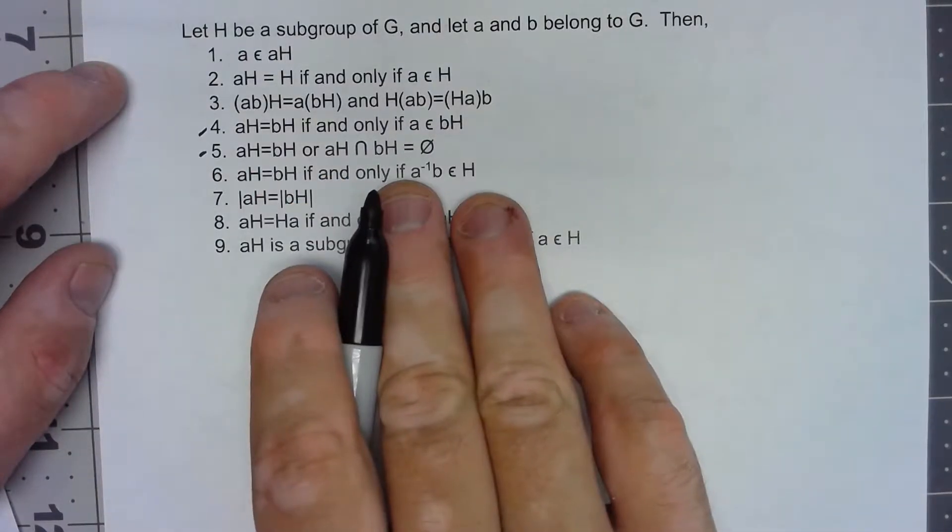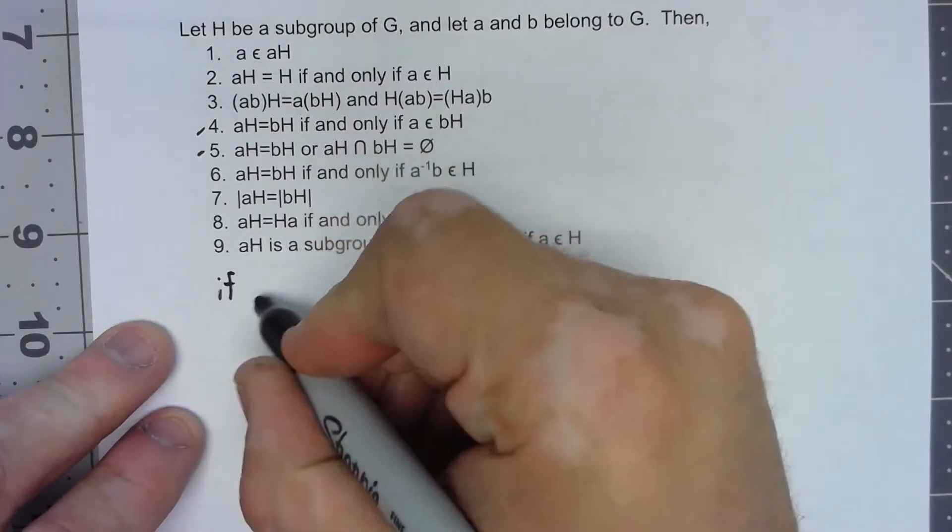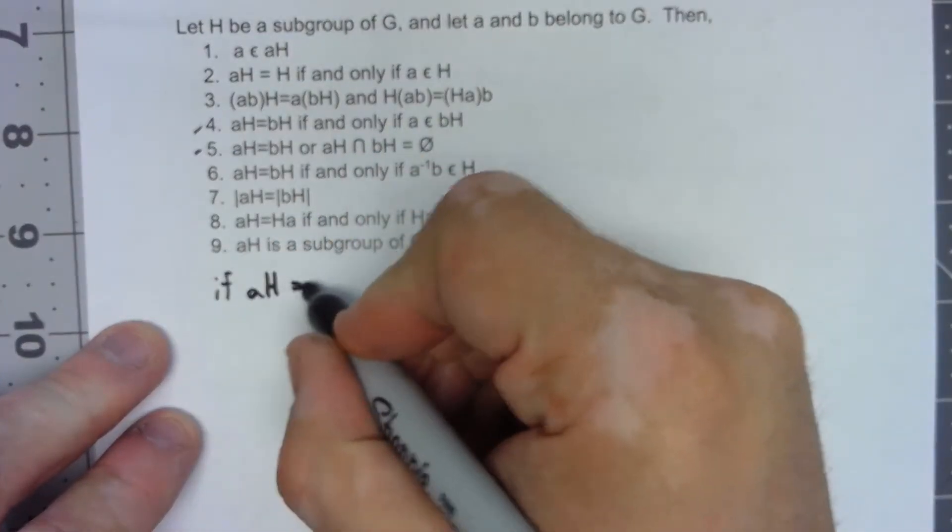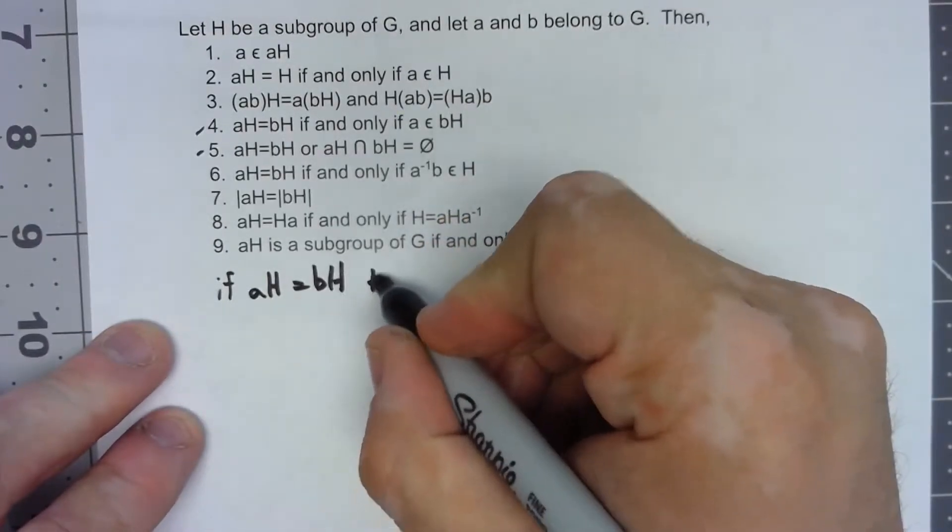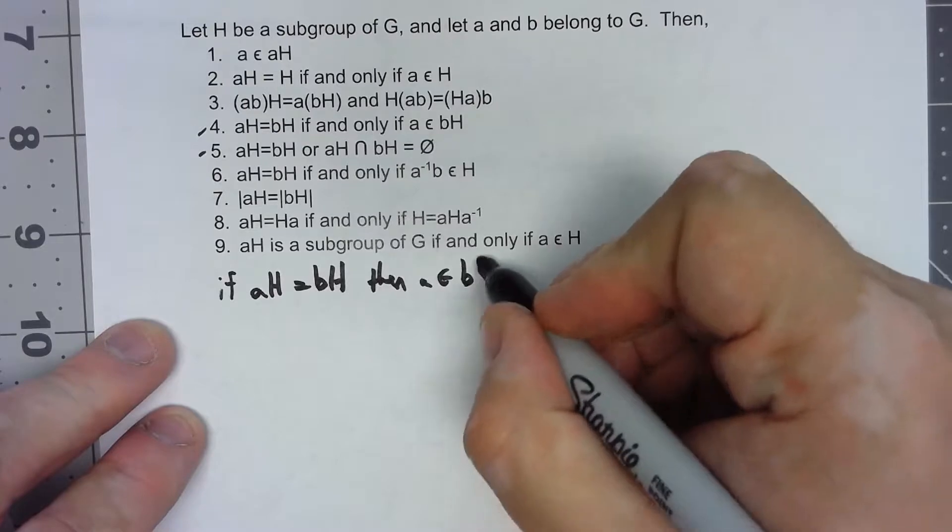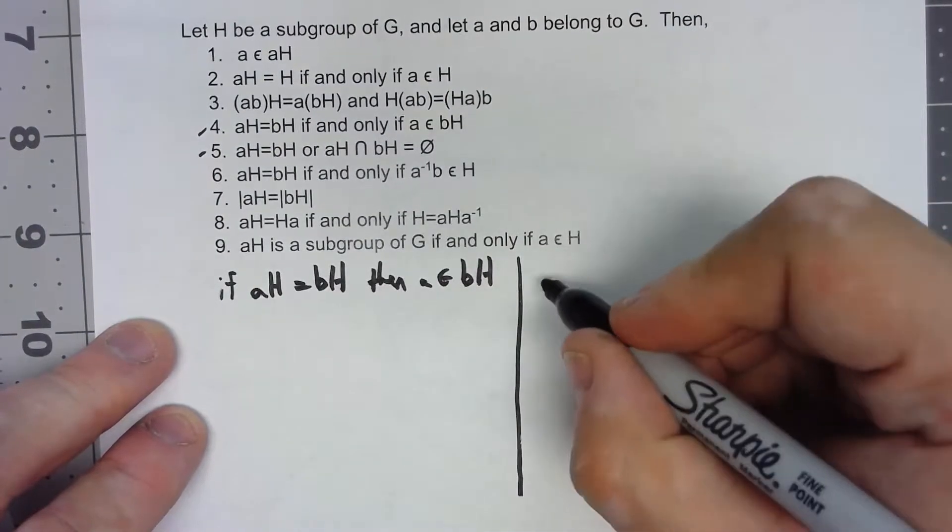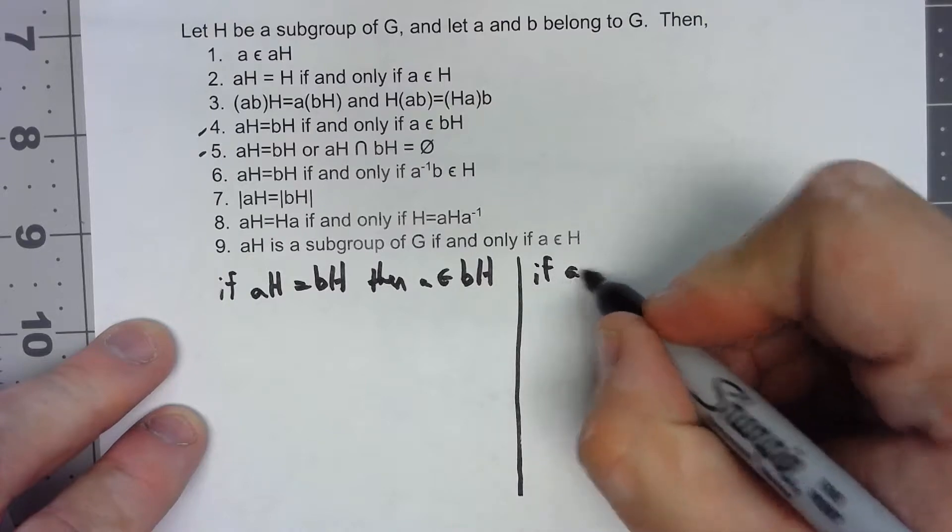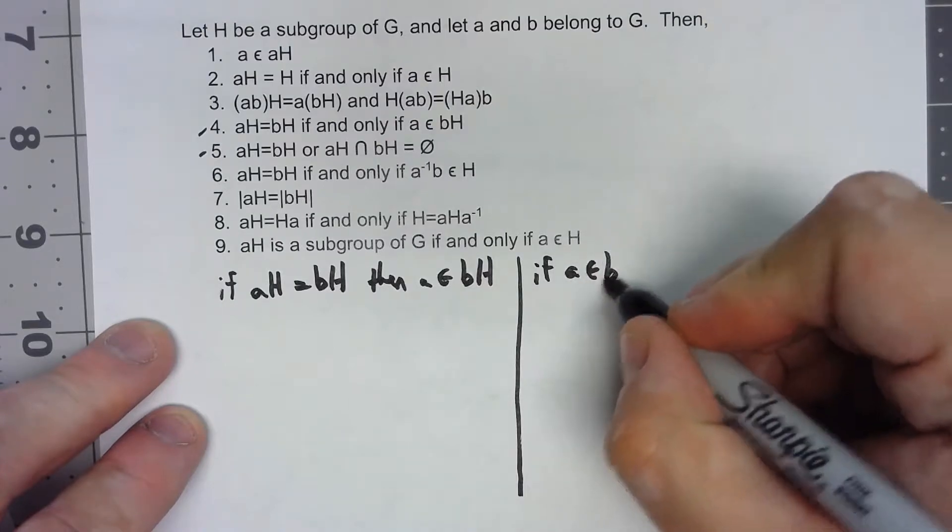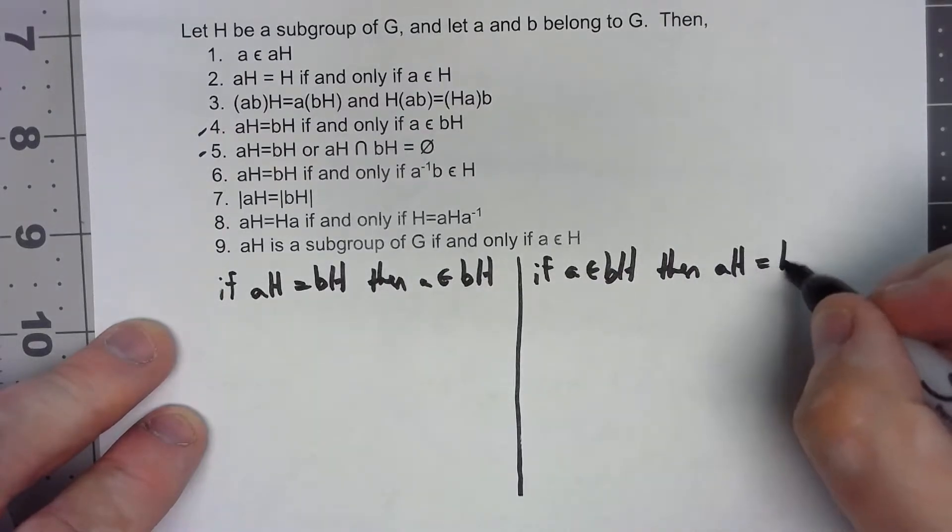Because it's an if and only if statement, there's really two things to prove. We need to prove if AH equals BH then A is in BH, and the other thing we have to show is if A is in BH then AH equals BH.